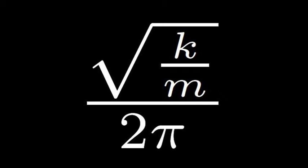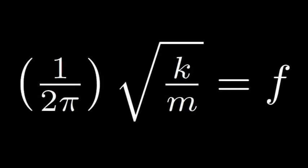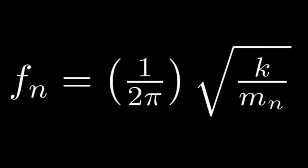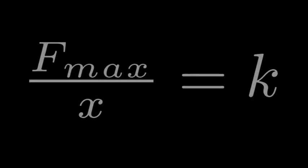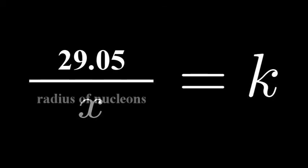So now we have our equation: f_n = (1/2π)√(k/m). In this case, m will be the average mass of the nucleons. Of course, we know that the spring constant is actually variable, so let's plug in our F_max of 29.05 newtons.